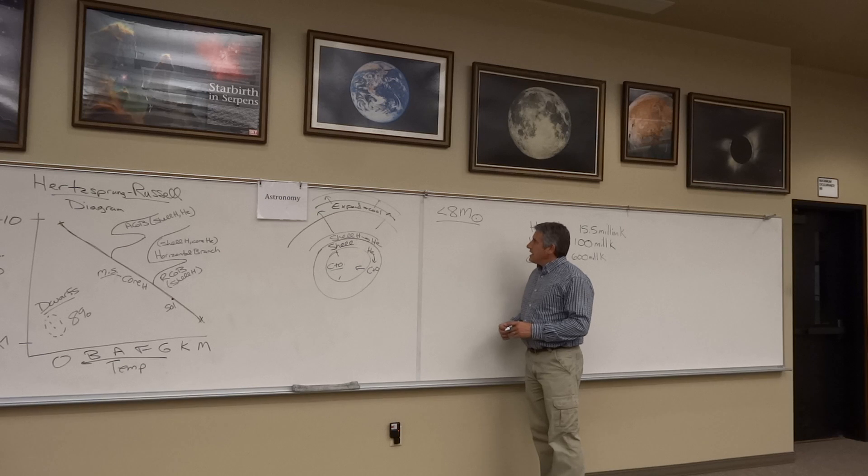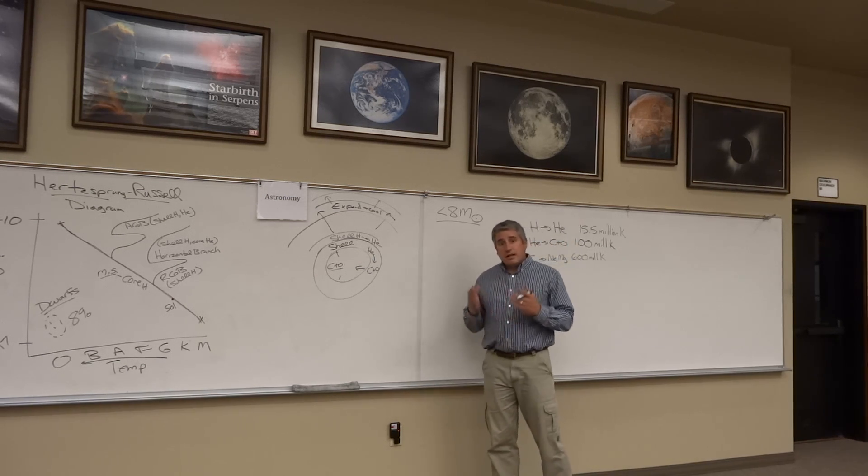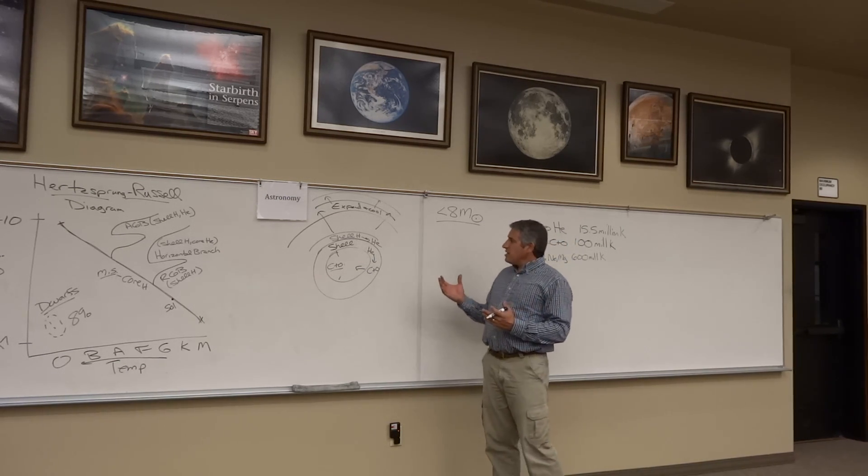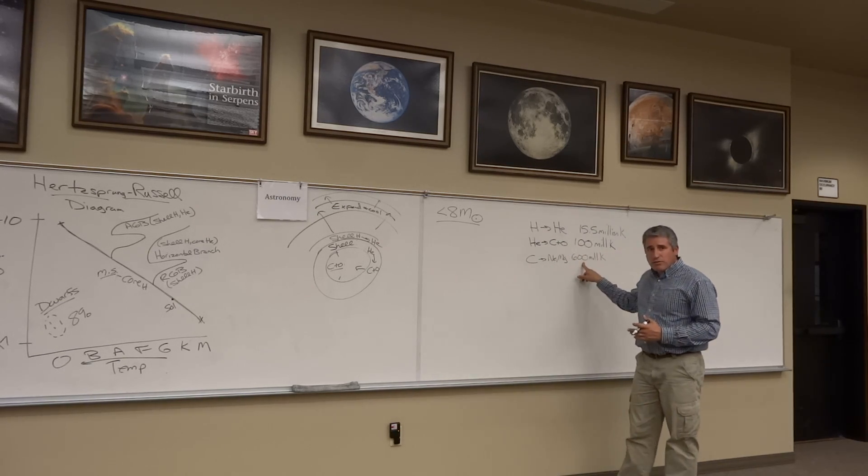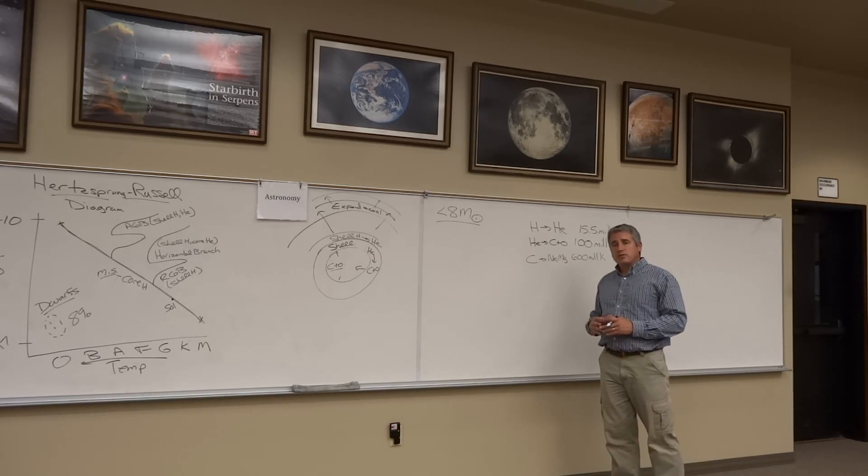A low-mass star is considered any star that's less than eight solar masses, like our Sun. Our Sun finds it impossible to reach the 600 million Kelvin threshold and begin to burn carbon at its core.